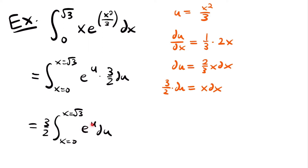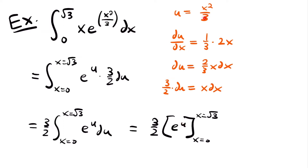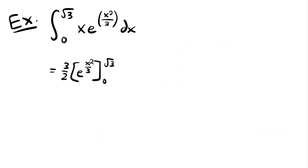We know the integral of e to the power of u du is just e to the power of u, and we drop the plus c because we're working with a definite integral. So this is equal to 3 halves times e to the power of u evaluated from x equals 0 to x equals square root of 3. Then we replace u with what we set it equal to, giving us 3 halves times e to the power of x squared divided by 3, evaluated from 0 to square root of 3.